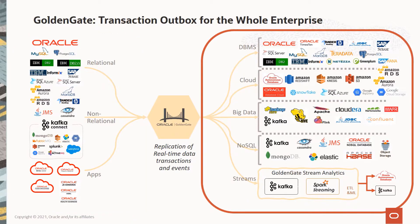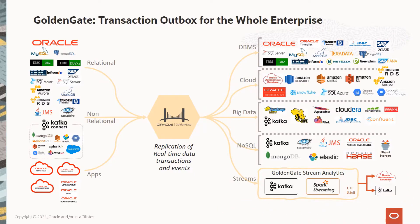Now look at the right side of the diagram. These are all the systems that GoldenGate can deliver transactions to. This includes Oracle and non-Oracle databases, both on-premises and cloud, non-relational databases, big data, and streams. This heterogeneous flexibility enables GoldenGate to be a multi-purpose tool for the enterprise.